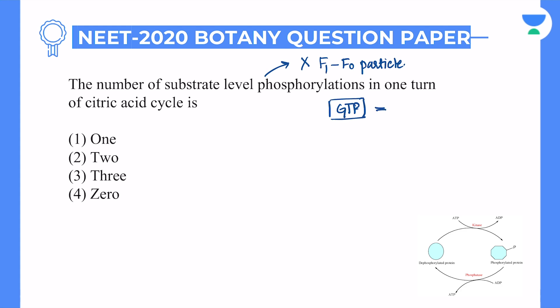We have a GTP molecule which is equivalent to ATP. So in one citric acid cycle, we get one ATP or one GTP. And hence this question will be answered: just one, option number one.